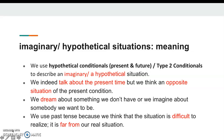We dream about something we don't have, or we imagine about somebody we want to be. Sahip olmadığımız bir şey hakkında ya da olmak istediğimiz kişi hakkında konuşuyoruz. We use past tense because we think that the situation is difficult to realize — to show how far it is from our real situation. Past tense kullanmamızın nedeni durumun gerçekleşmesinin ne kadar zor ya da imkânsız olduğunu, şimdiki gerçek durumumuzdan ne kadar uzakta olduğunu vurgulamak içindir.